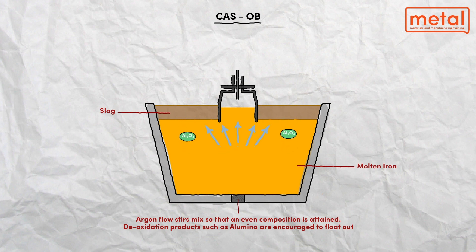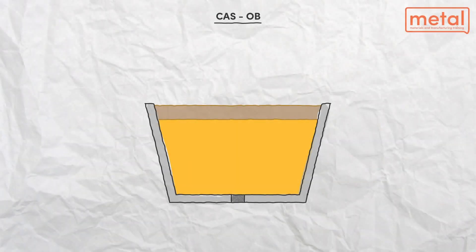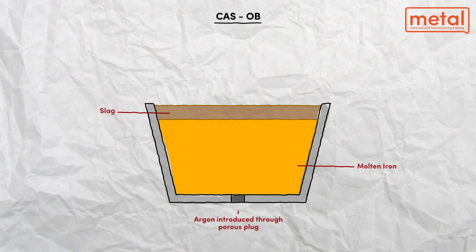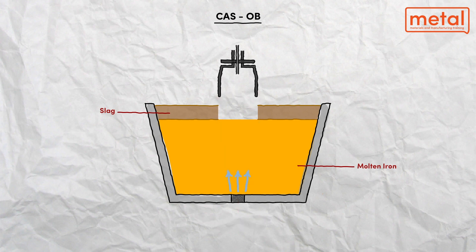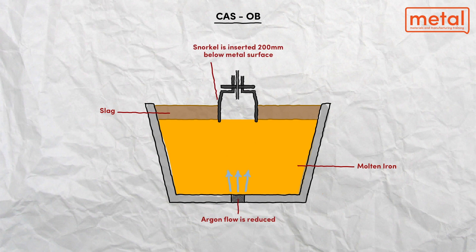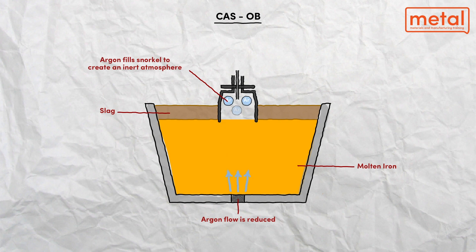The main feature of the process is the refractory bell, underneath which alloy additions to the bath are made. The steel ladle is positioned such that the bell is situated right above the porous stirring plug. This ensures that the agitated surface of the steel bath is confined to the area underneath the bell. Bottom bubbling gas creates an open eye in the slag layer, and the bell is lowered onto the liquid steel over this open eye.